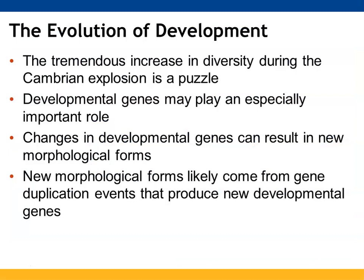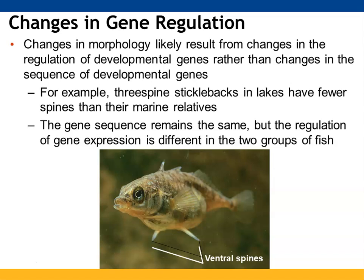The great diversity during the Cambrian explosion is thought to have involved developmental genes playing a significant role, leading to new morphological forms as a result of gene duplication events that produced additional developmental genes. However, these morphological changes are probably not due as much to gene sequence as to the regulation of the genes. For example, the three-spine stickleback in lakes has fewer spines than its marine relatives — the gene sequence is exactly the same, but the regulation of the gene differs.